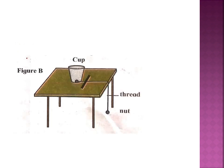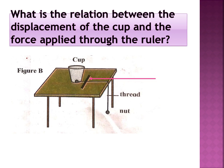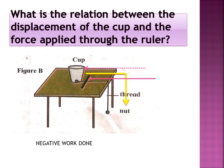As shown in Figure B, the cup slides along the table. We stop it by placing a ruler in its path. The force applied by the ruler and the displacement of the cup are in opposite directions, so we can conclude that when force and displacement are in opposite directions, it is negative work done.